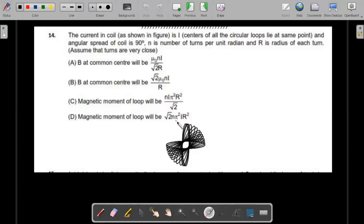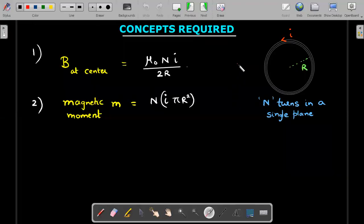I hope you have given it enough try, so let's move ahead and see the solution. First we'll start with the concepts that are required. The two concepts you should know by now if you are a JEE Advanced student and you've done this topic: if a circular coil is there with capital N number of turns in the same plane, the magnetic field at the center using Biot-Savart law is mu naught N i divided by 2 times the radius.